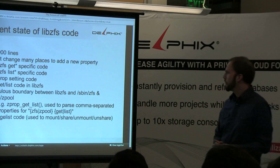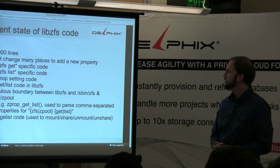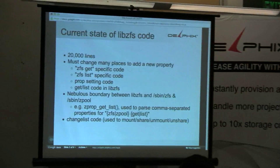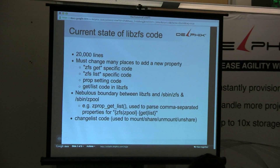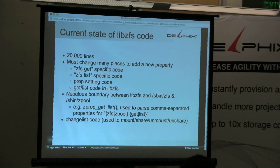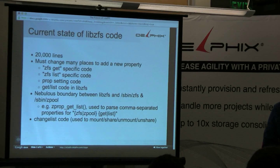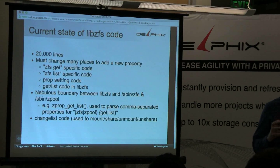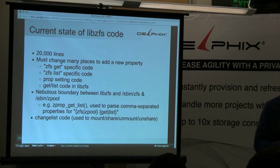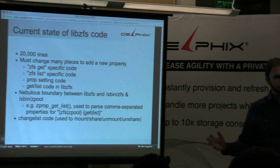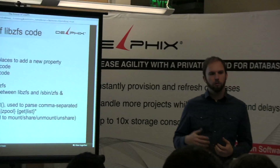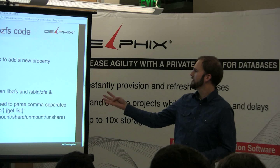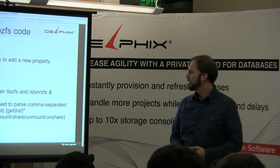Taking a look at what the LibZFS code looks like — it's pretty big. It's not ridiculous, but 20,000 lines is not small. There are a lot of things where knowledge of a given concept is spread out all over the codebase. For example, when adding a new property, you have to modify at least four places that I found with a quick look.